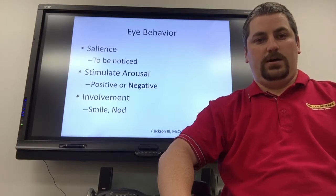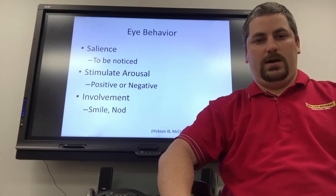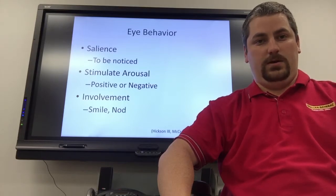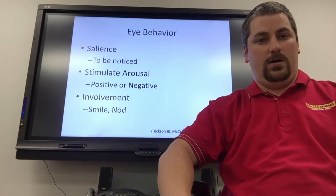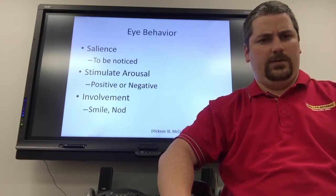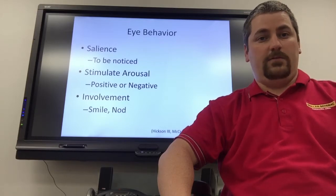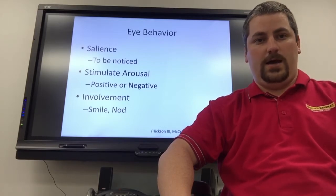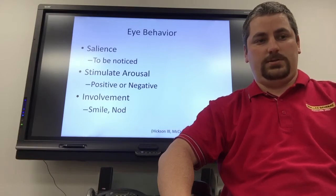The second part of eye behavior is to stimulate arousal. You'll stimulate arousal both positive or negative depending on how the person reacts or how the eye contact is. Giving a person a mean look will give negative feedback, and giving a person a nice smile and high eyebrows may give another positive reaction.